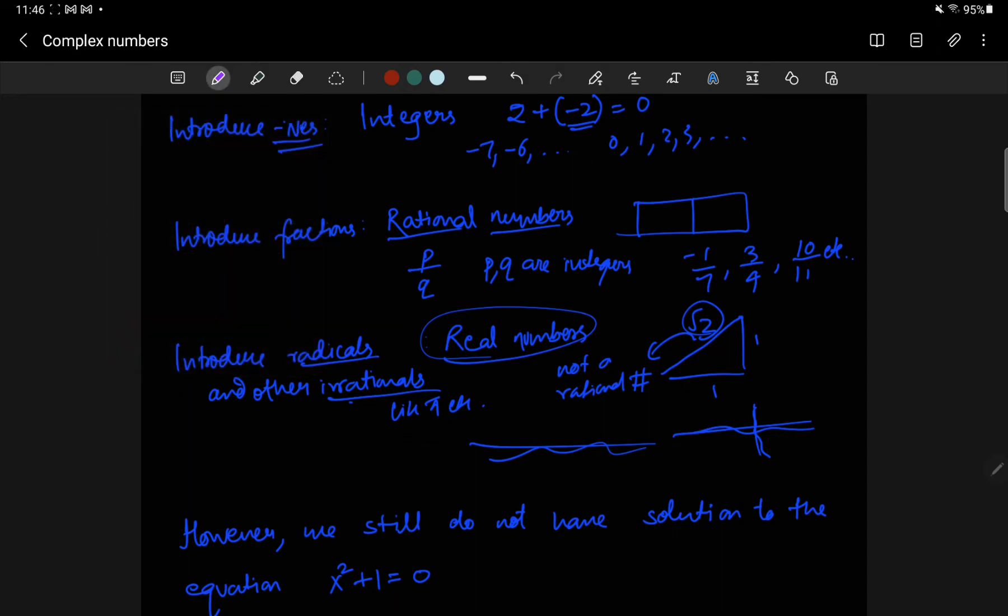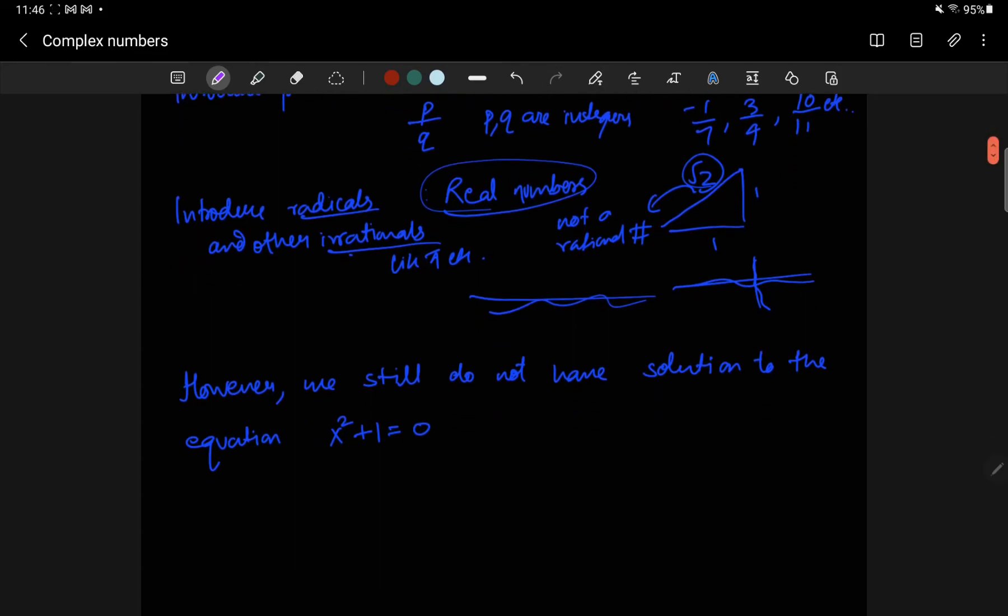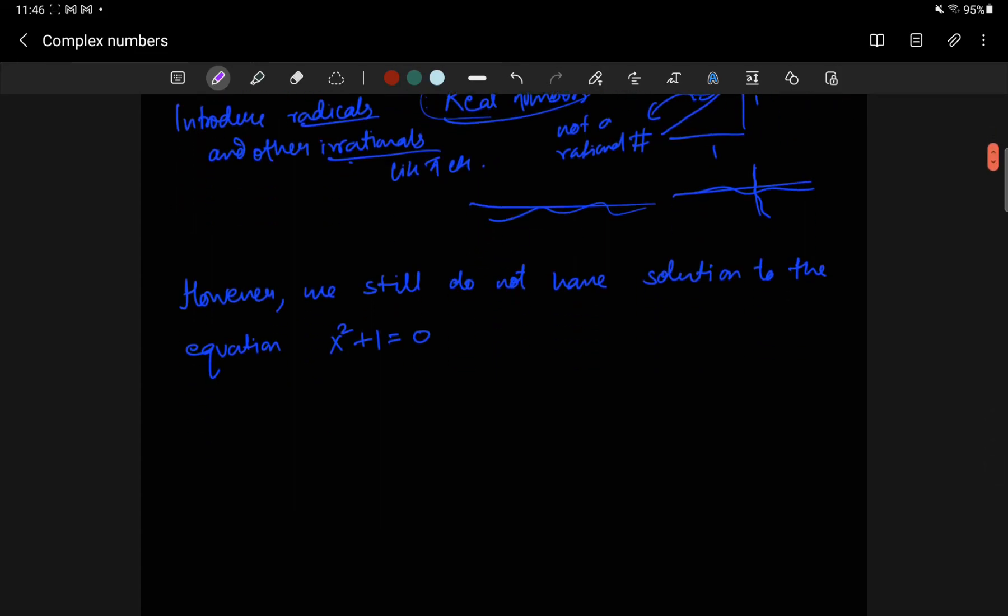And then it turns out that many hundreds of years later, there was a need for another kind of number. To finally complete the picture is that with real numbers, we still do not have a solution to this equation, x squared plus 1 equals 0. Because if you try to solve this, you end up with x squared equals negative 1, and x is square root of negative number. So square root of negative number is not defined as a real number.